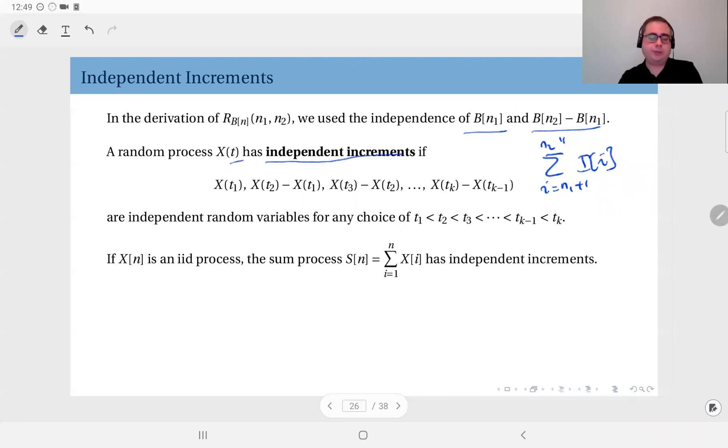Random process X(t) doesn't have to be discrete time or discrete value. It has independent increments if X(t1), X(t2) minus X(t1), X(t3) minus X(t2), X(t4) minus X(t3), etc., X(tk) minus X(tk minus 1)...